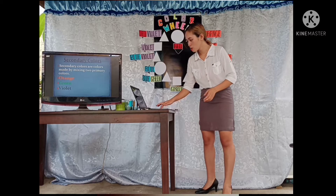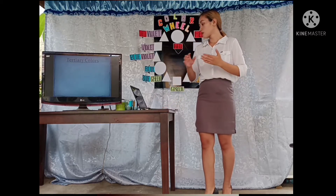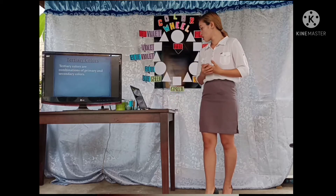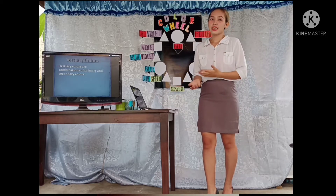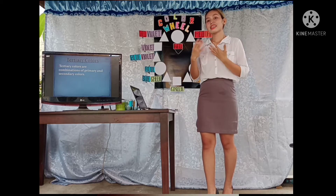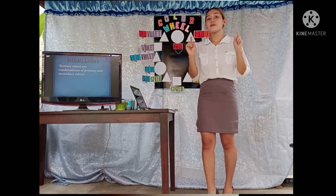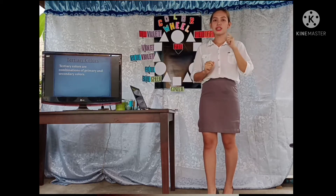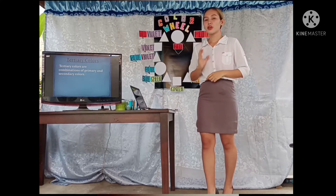Let's proceed to the tertiary colors. Tertiary colors are combinations of primary and secondary colors. Primary colors are red, blue, and yellow. Secondary colors are green, orange, and violet. If you put together one primary color and one secondary color, the result is a tertiary color.